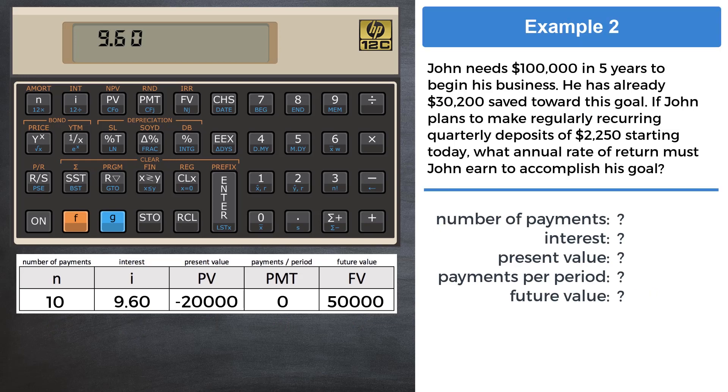Example 2: John needs $100,000 in five years to begin his business. He already has $30,200 saved toward his goal. If John plans to make regularly reoccurring quarterly deposits of $2,250 starting today, what annual rate of return must John earn to accomplish his goal? Clear financials with F REG.